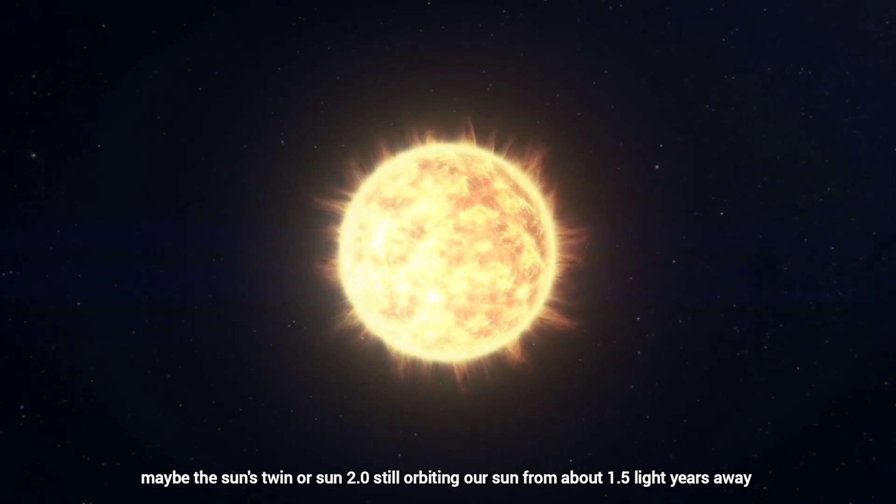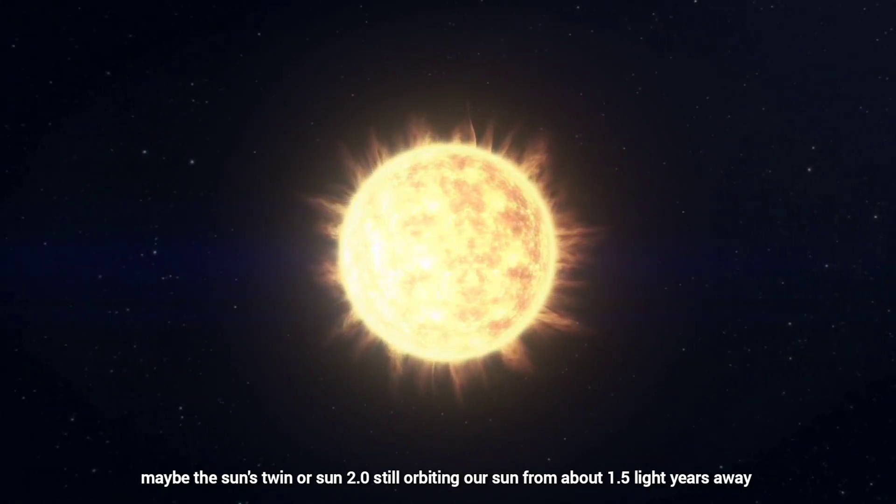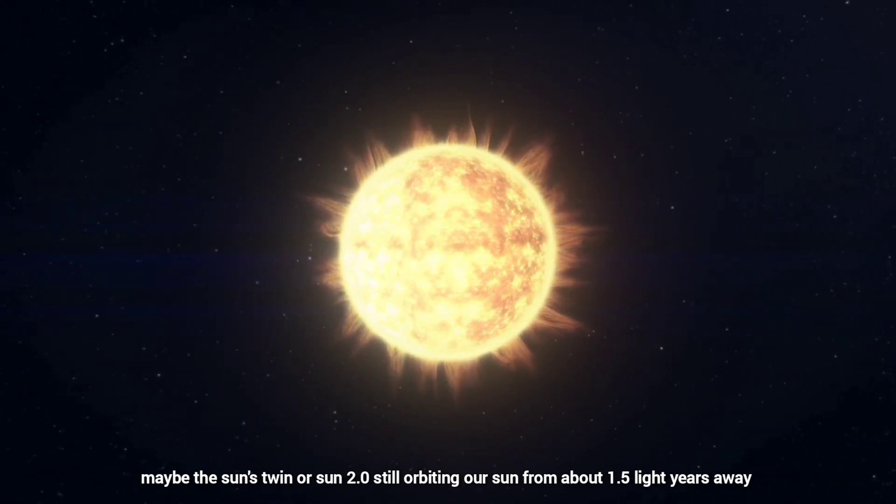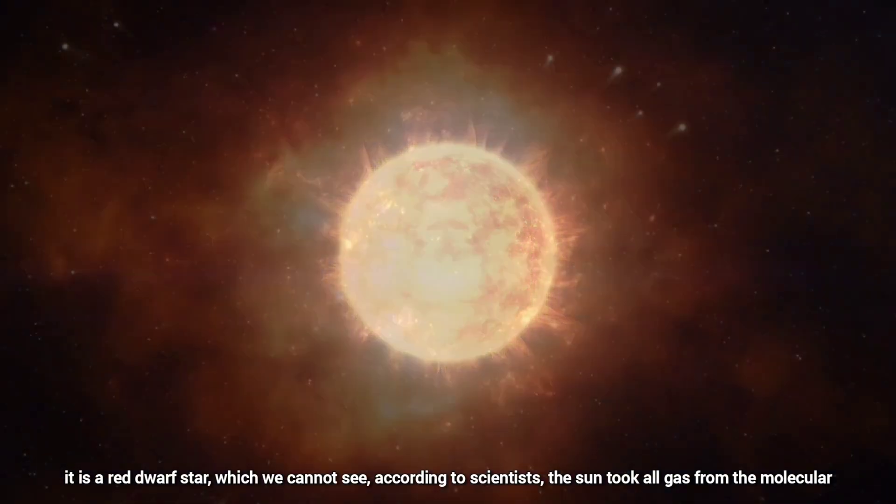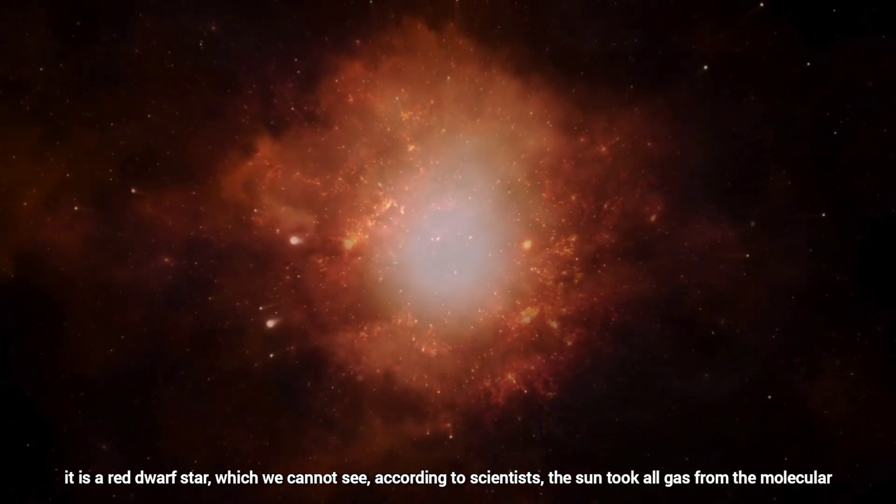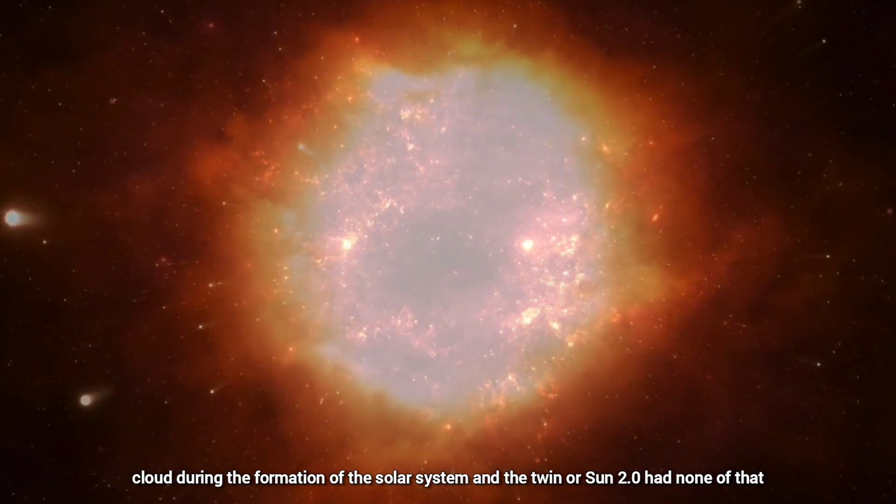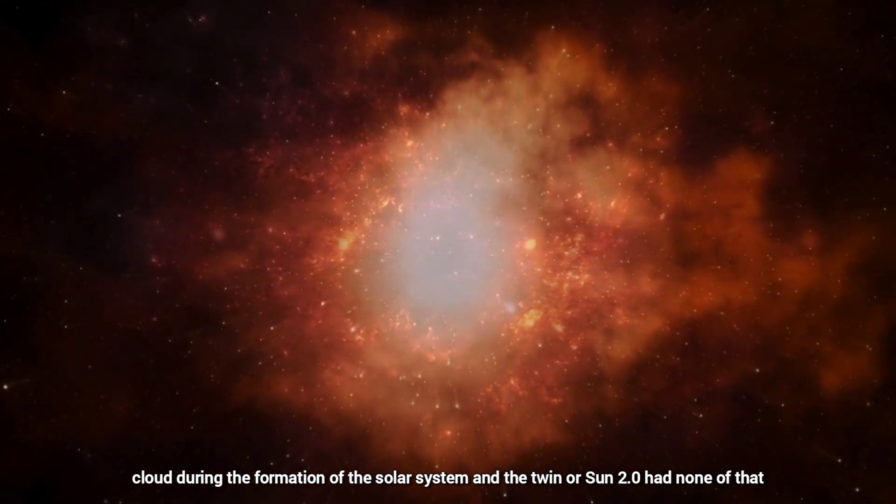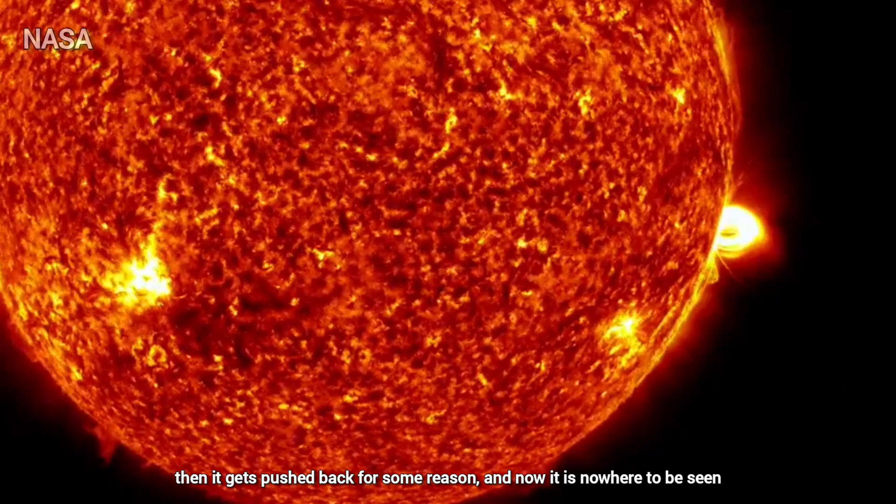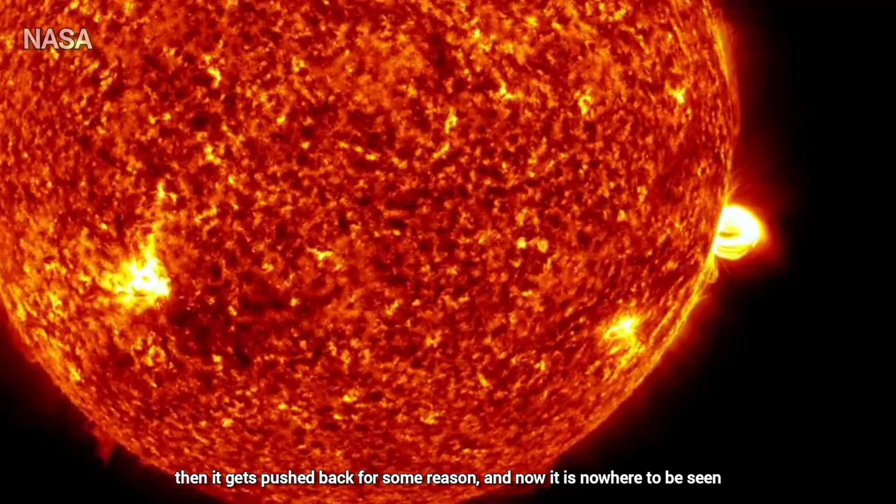Maybe the Sun's twin or Sun 2.0 is still orbiting our Sun from about 1.5 light years away. It is a red dwarf star which we cannot see. According to scientists, the Sun took all gas from the molecular cloud during the formation of the solar system, and the twin or Sun 2.0 had none of that. Then it gets pushed back for some reason, and now it is nowhere to be seen.